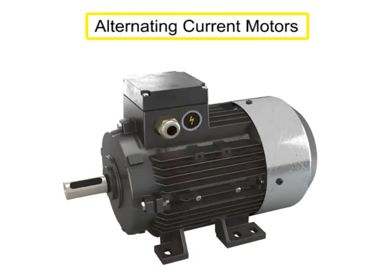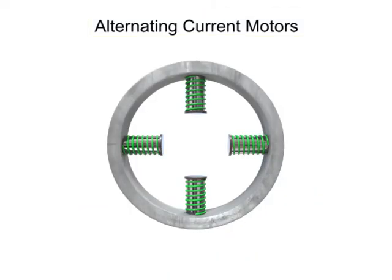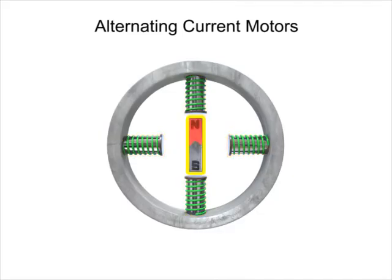Alternating current motors function based upon the principle of having polarities within a rotating magnetic field. Inside an AC motor are housed stationary electromagnetic coils, or stators, positioned around a movable magnet called a rotor.